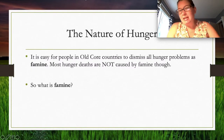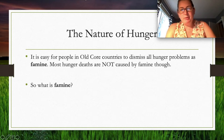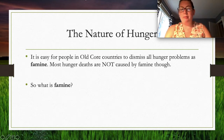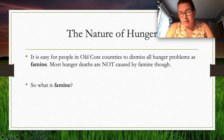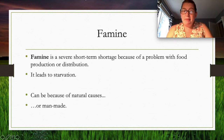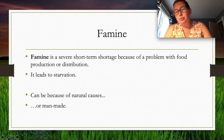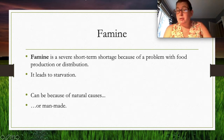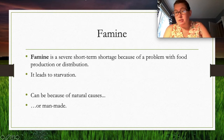Let's start with the nature of hunger. It's easy for people in core countries to dismiss all hunger problems as famine, but most hunger deaths are not famine. A famine is a severe, short-term shortage of food due to problems with food distribution or production — for example, a drought that stops crops from growing, leading to a food shortage and starvation.